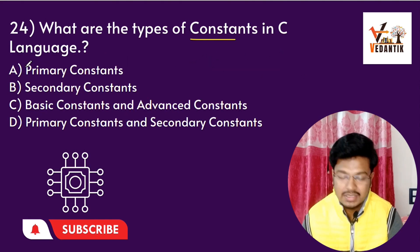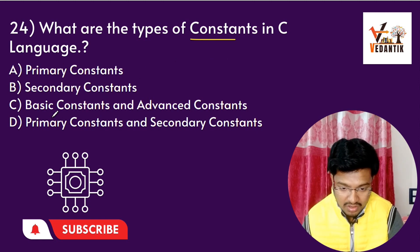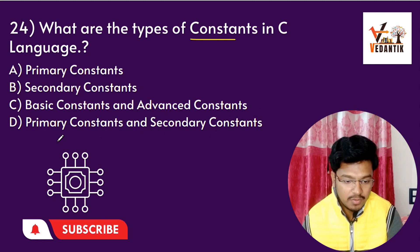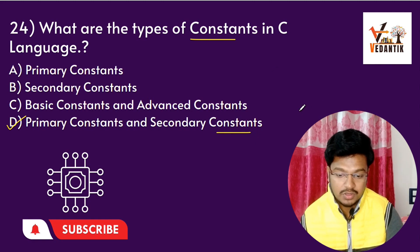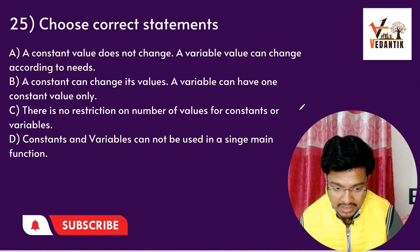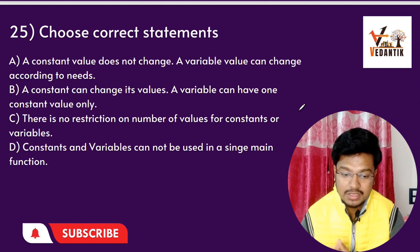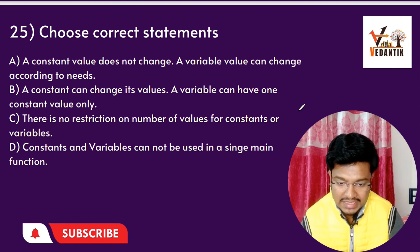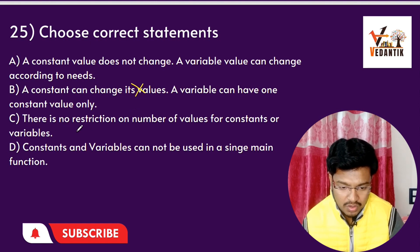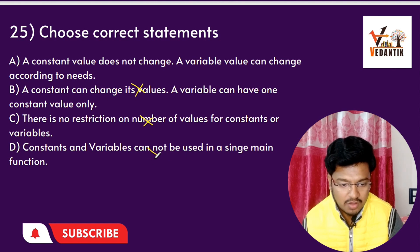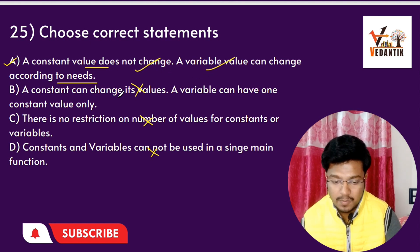Question 19: What are the types of constants in C language? Options are: primary, secondary, basic, advanced. The answer is primary and secondary. Primary constants include int and float. Secondary constants include string, array, and linked list. Question 20: Choose the correct statement — a constant value does not change; a variable can change according to needs.